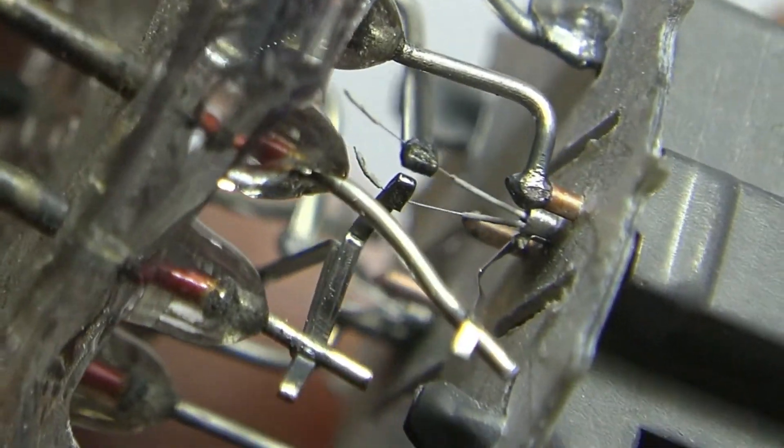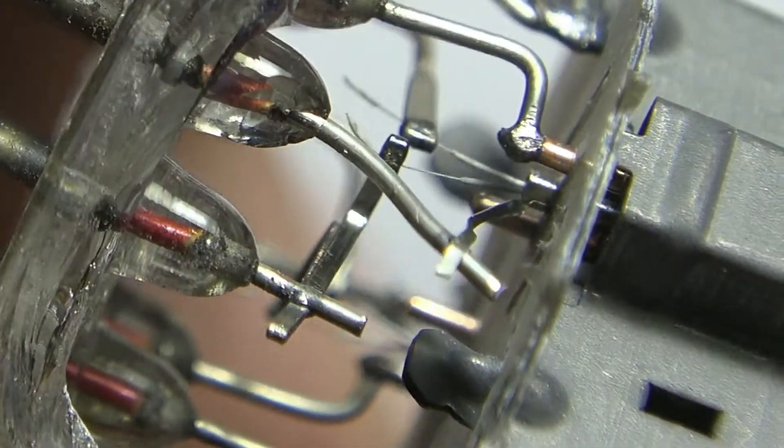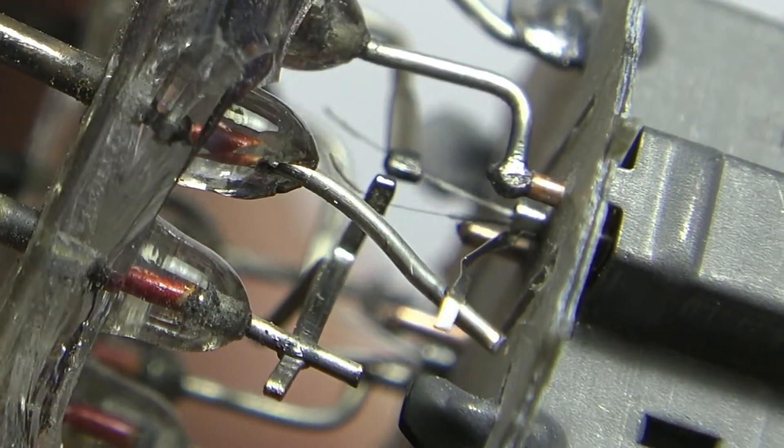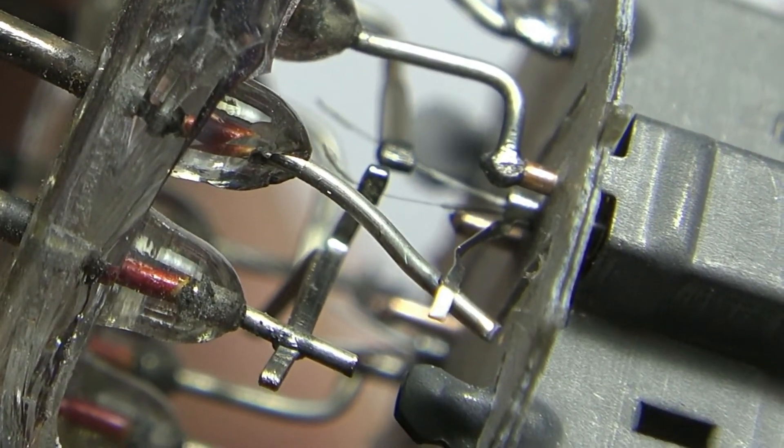Here, show you the detail of this. So here's the filament wires, you can see the spot welds for the grid and a cathode.